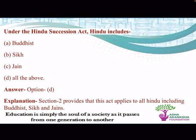Under Hindu Succession Act, 'Hindu' includes: A. Buddhist, B. Sikh, C. Jain, D. All of the above. The correct answer is all of the above. You can find the definition of Hindu in section 2 of the Hindu Succession Act, which specifies that it includes Buddhists, Sikhs and Jains.